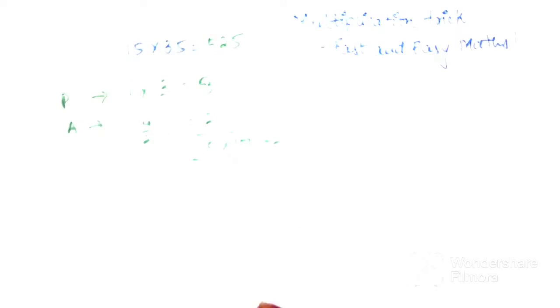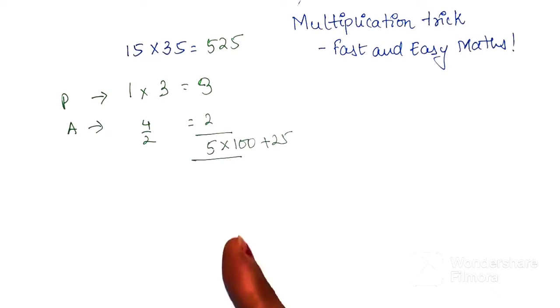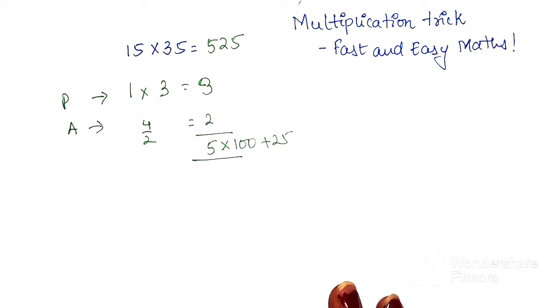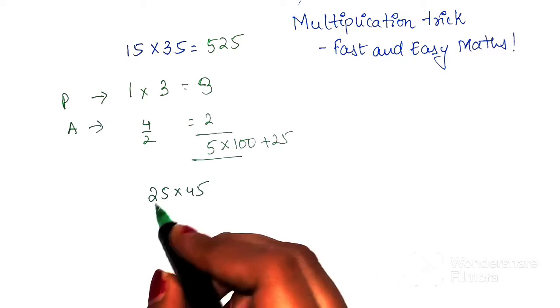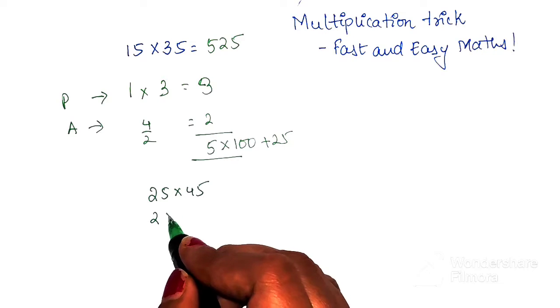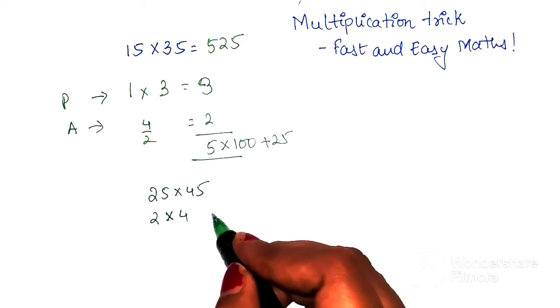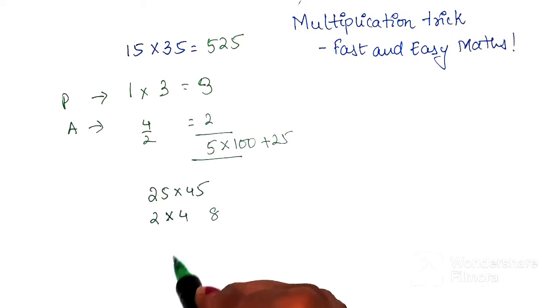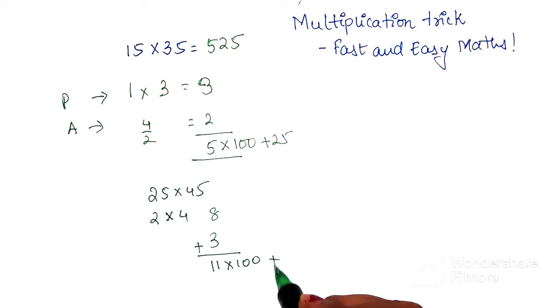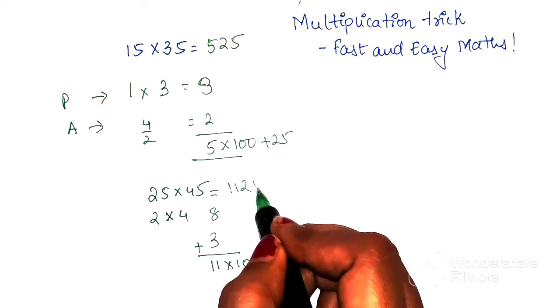Let's do this one more time. At the end of this video I'm going to show you the reason how this is actually working as well. Let's try one more number: 25 into 45. Again we look at 2 and 4, so 2 into 4 gets you 8. 2 plus 4 gets you 6, divided by 2 gets you 3. Adding them gets you 11, into 100 gets you 1100 plus 25, so your final answer is 1125.